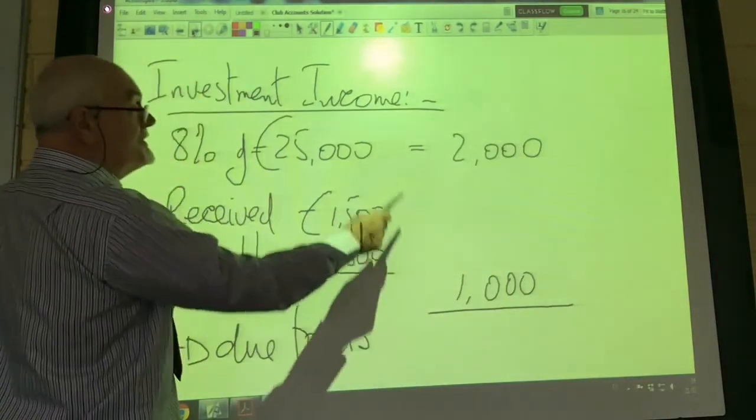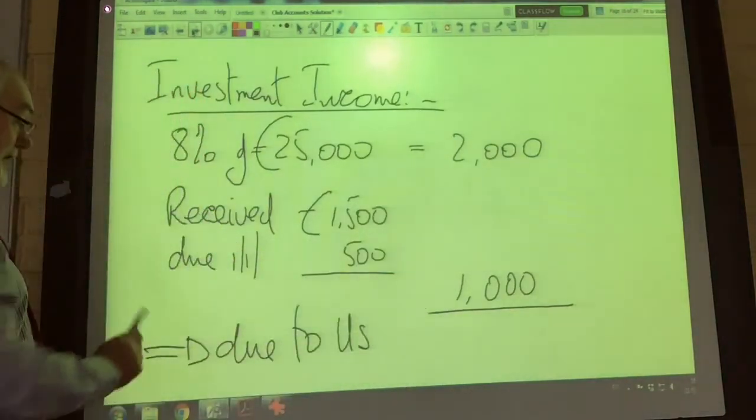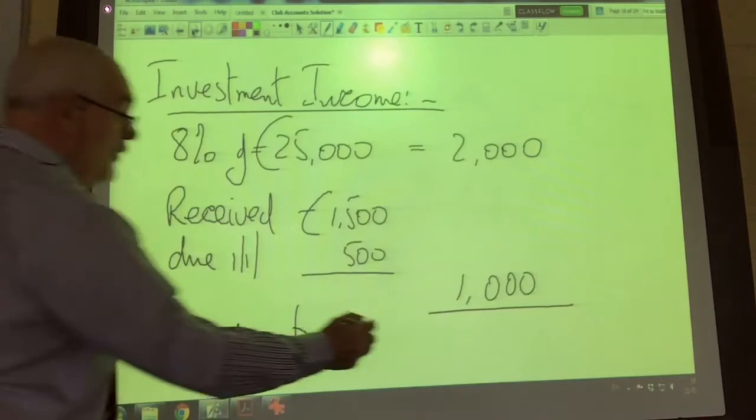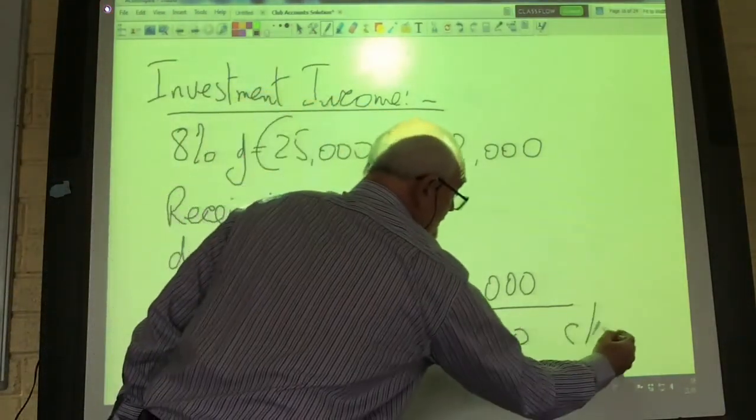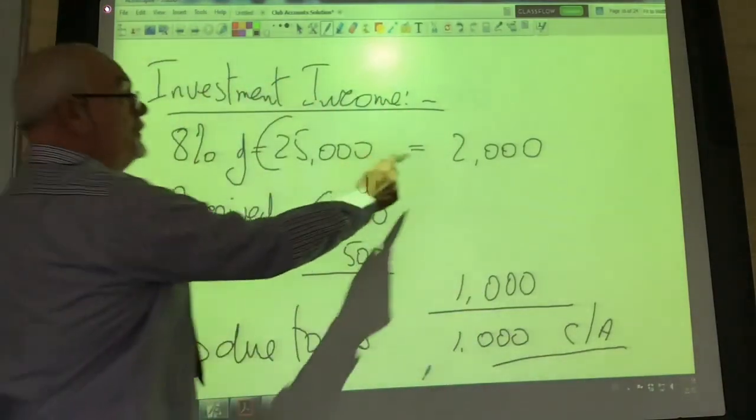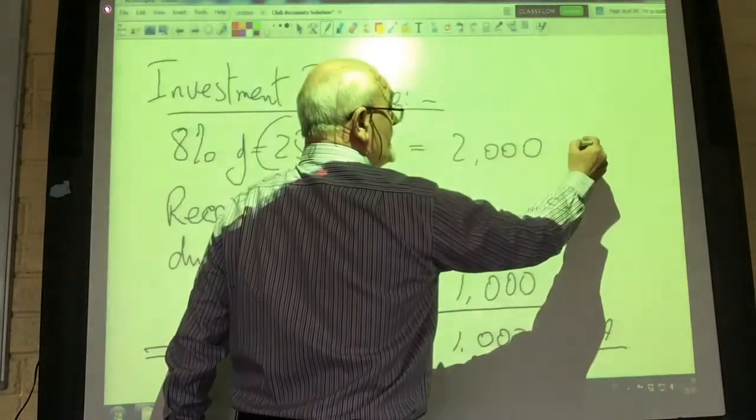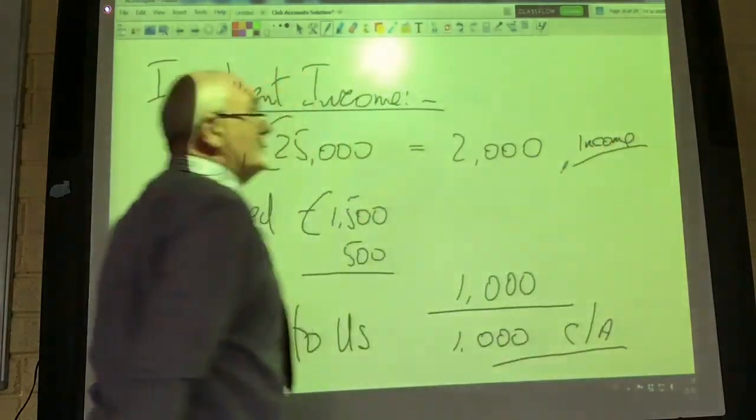We're due to receive 2,000, of which we received 1,000. So we are owed 1,000 euro in investment income, which we'll put into our balance sheet as a current asset. The 2,000 euro will go into our income and expenditure account as well.